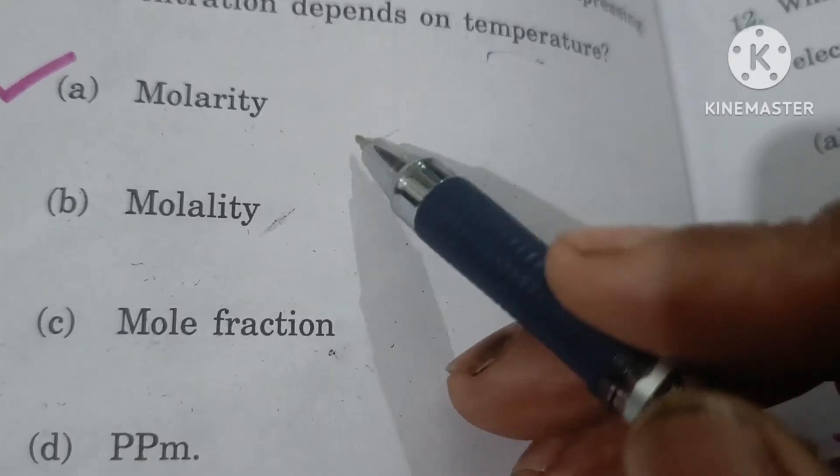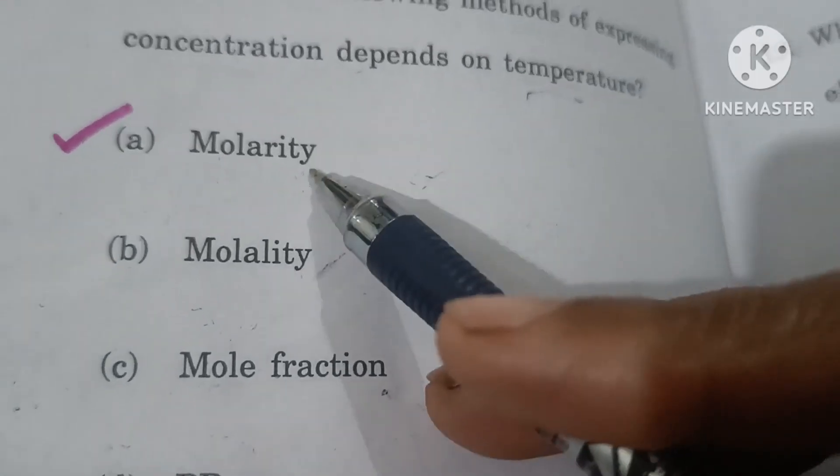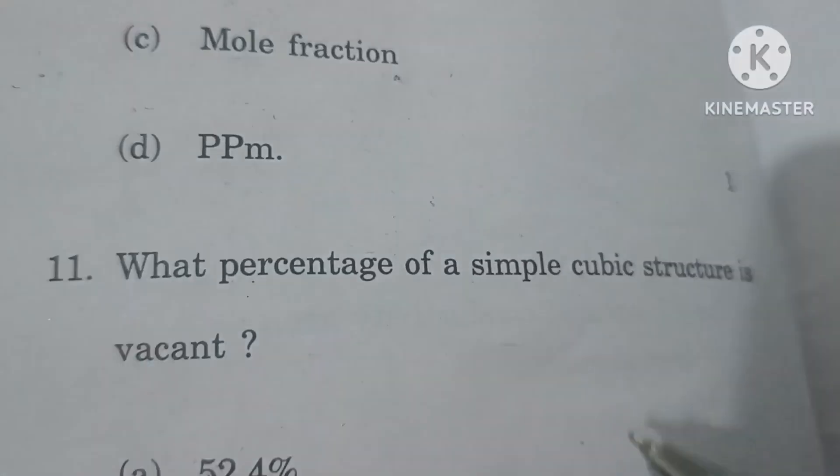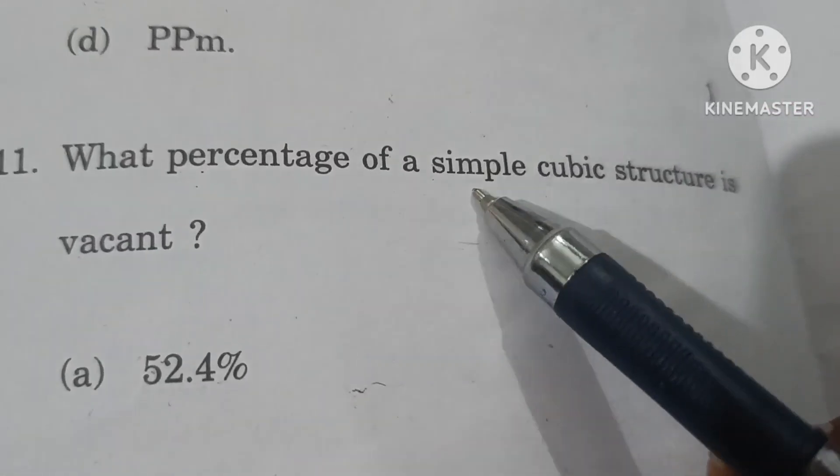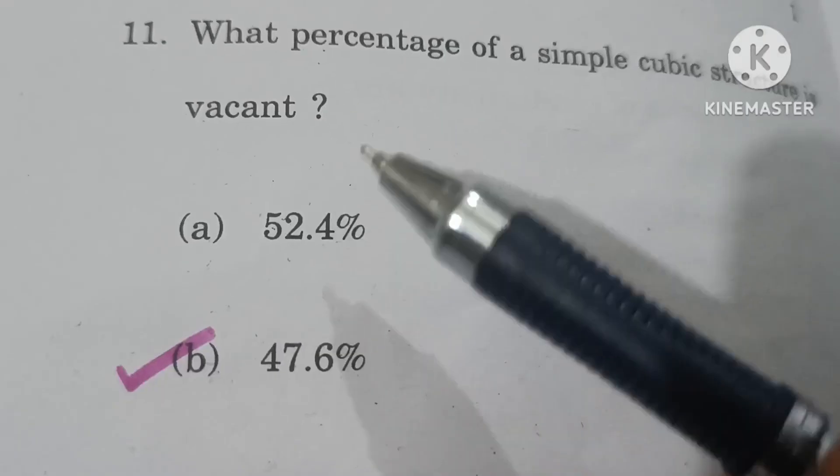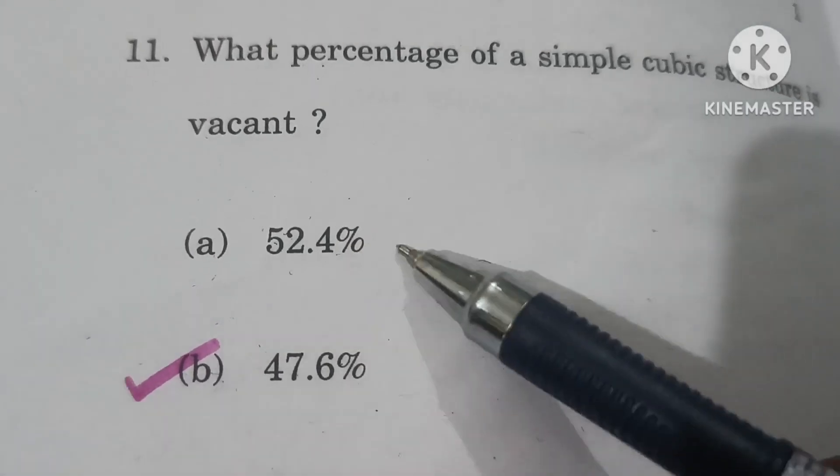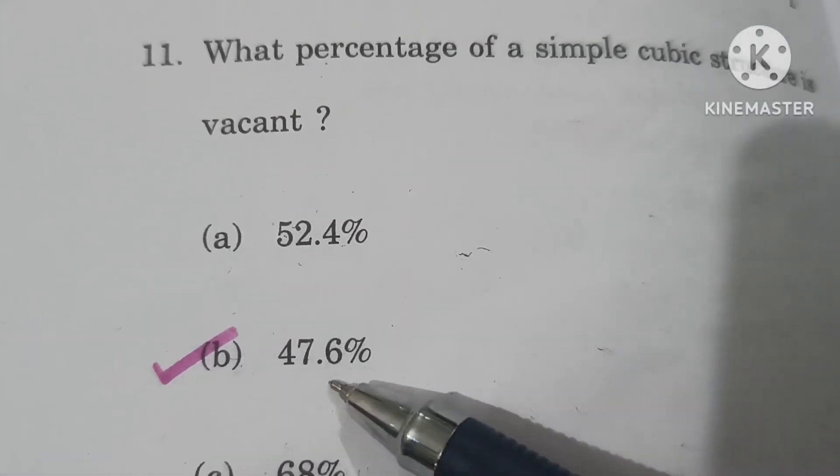Molarity depends on temperature because with temperature the volume in the denominator changes. What percentage of simple cubic structure is vacant? Occupied is 52.4%, so vacant will be 100 minus 52.4, which is 47.6%.